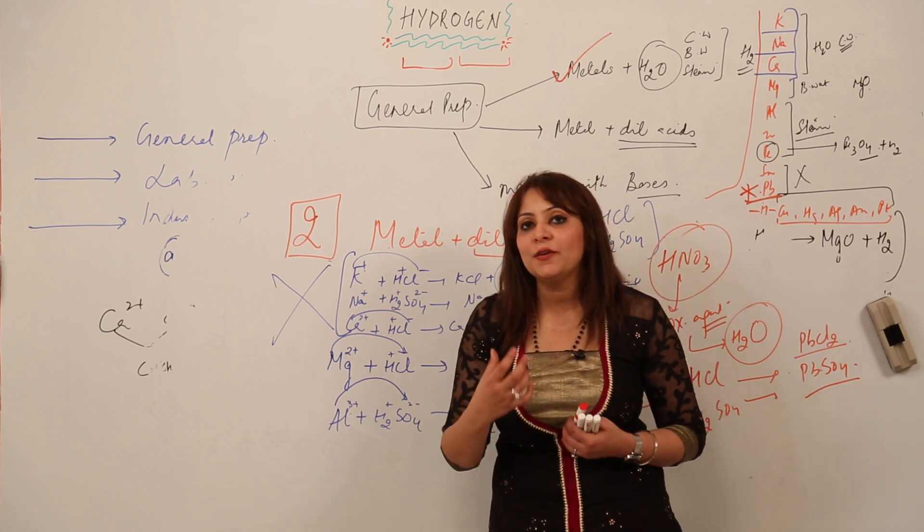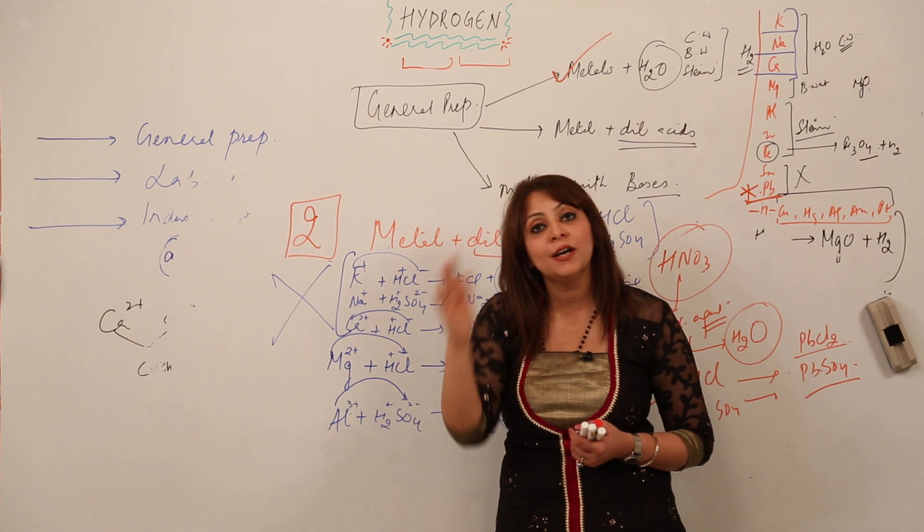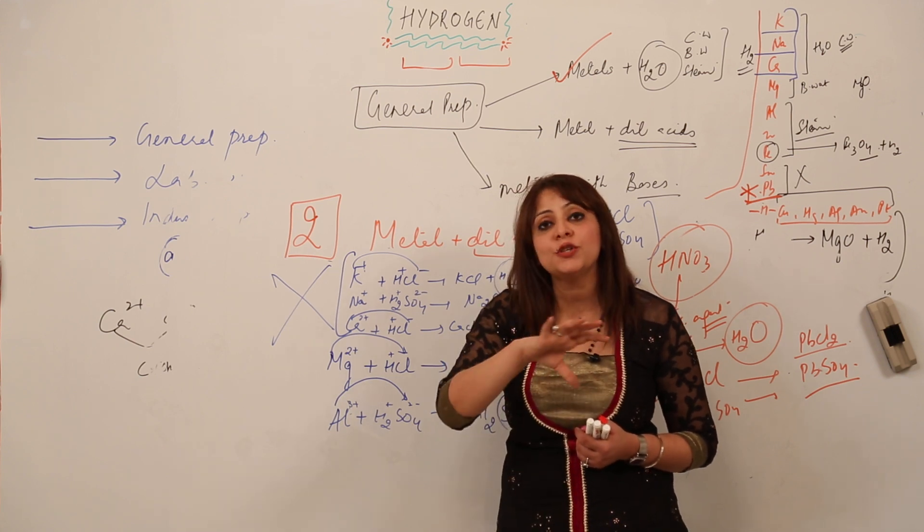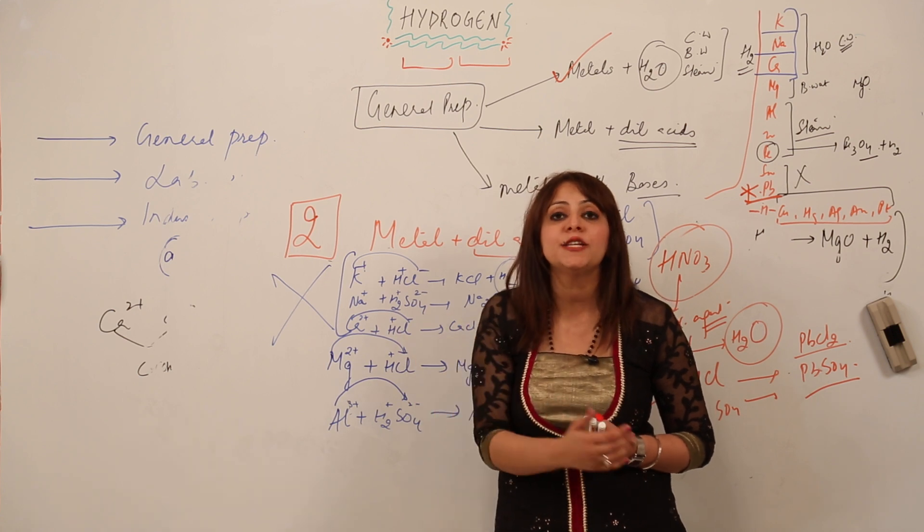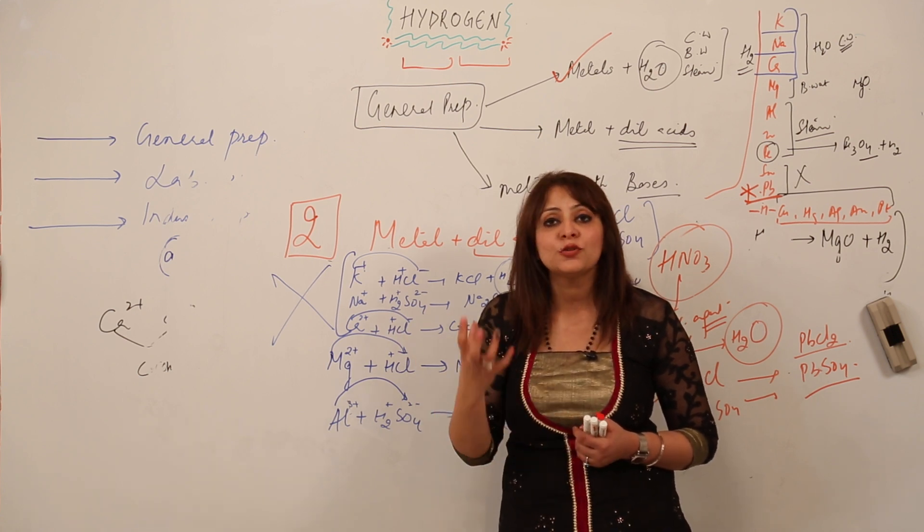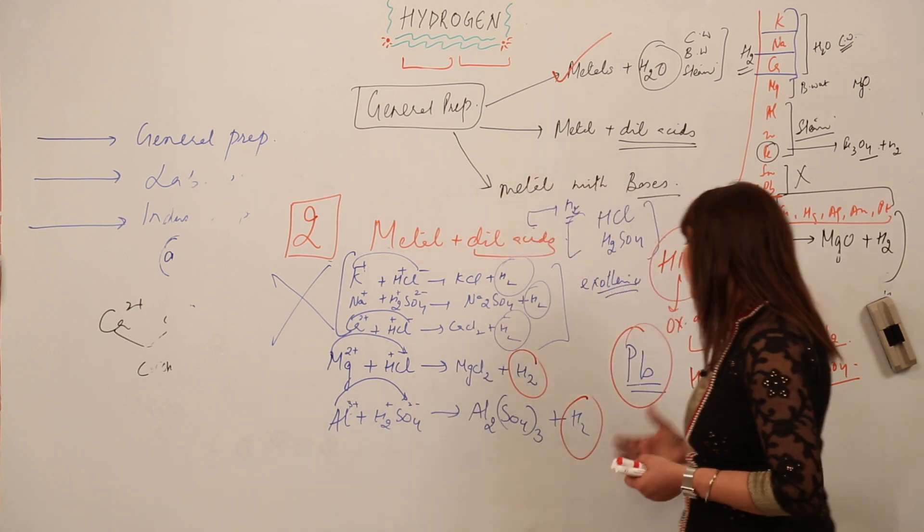So we cannot use lead because only the surface is reacting and after that it forms a layer which does not allow the lead from reacting. That means most of the lead remains unreacted, so lead cannot be used.